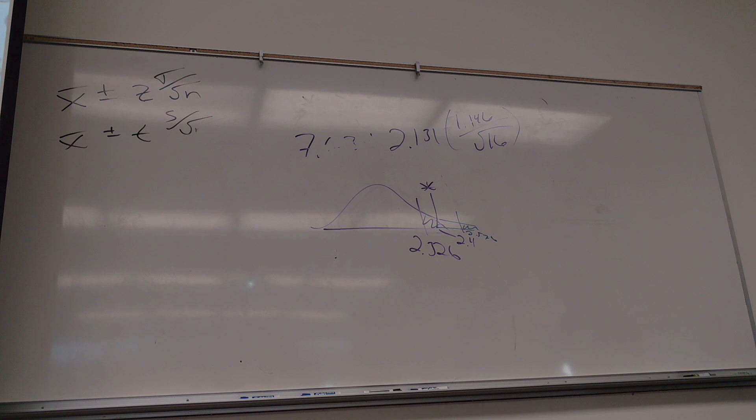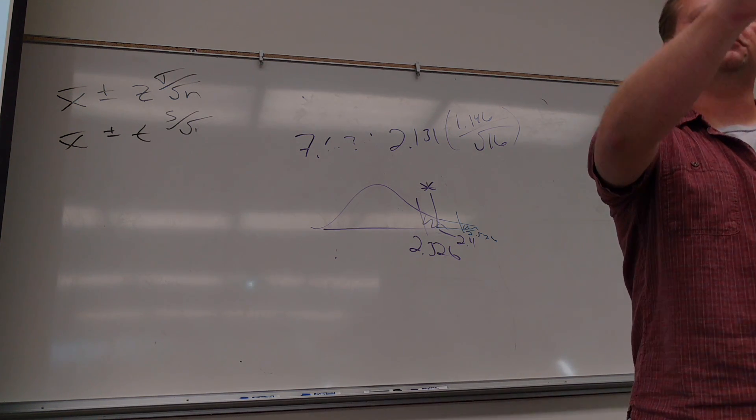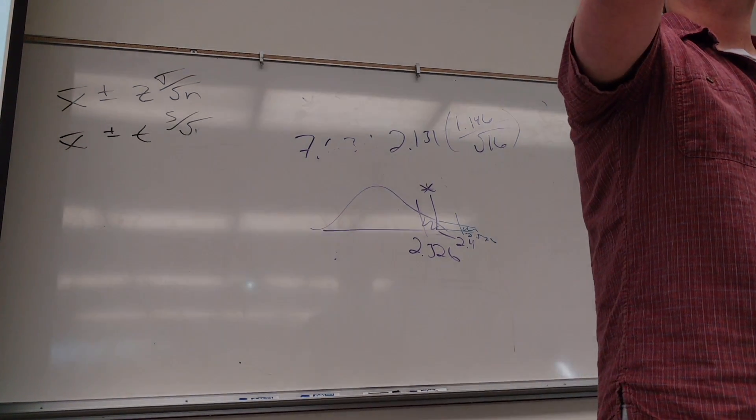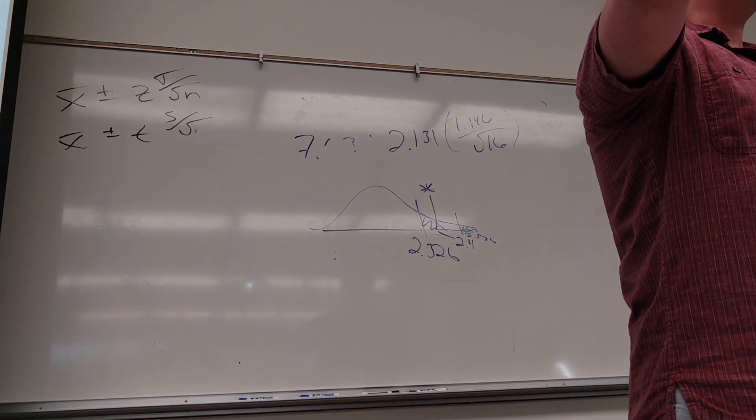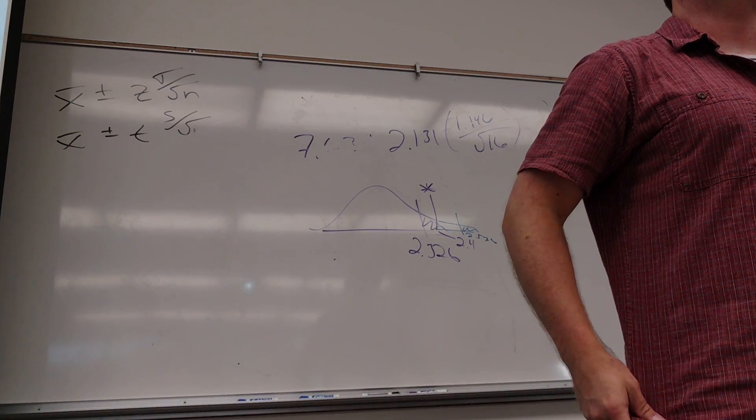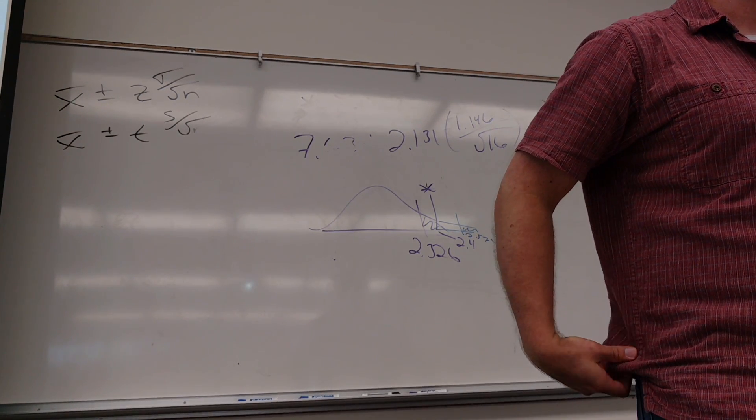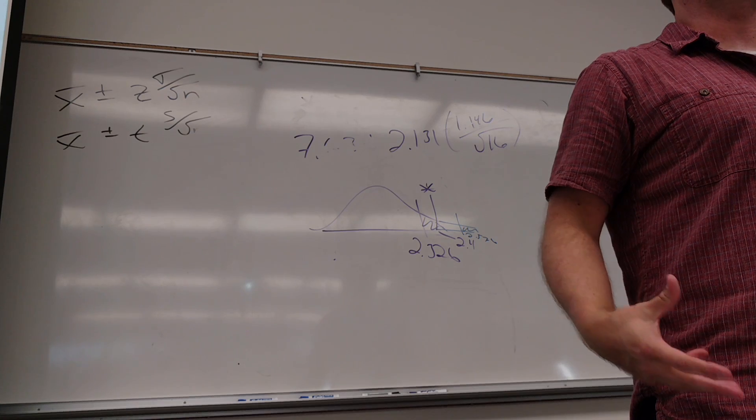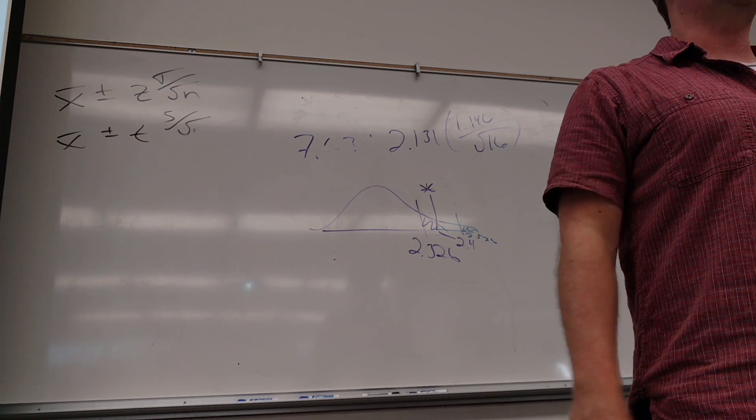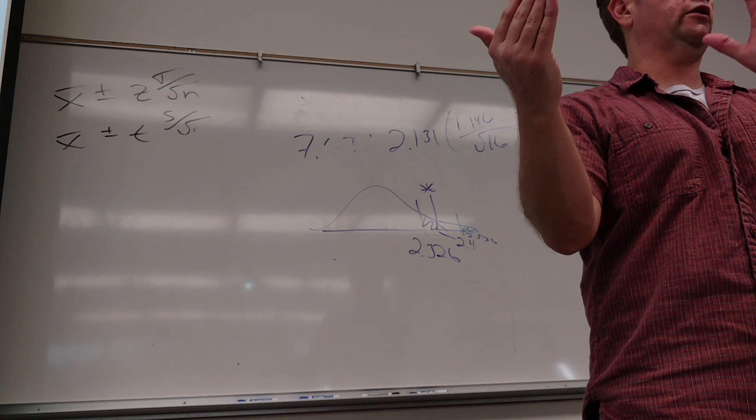So another reason why we report the p-value is it gives me an idea how strong a test it could pass. So let me see if you guys are at this level with me yet. Would you say alpha of 0.10 is a strong test to pass? Is that really good evidence? No, that's a 10% chance I'm wrong.